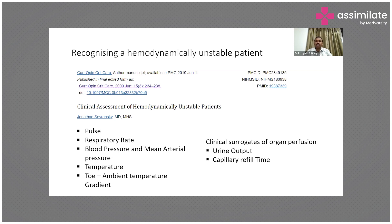There are other clinical surrogates for organ perfusion: urine output and capillary refill sign. When it comes to pulse rate, if the patient is hemodynamically unstable, the heart rate is on the higher side and can go as high as 150 to 160. The respiratory rate can also be elevated, unless the patient is just prior to cardiac arrest where both are on the lower side. Of blood pressure parameters, mean arterial pressure is more indicative of hemodynamic status. Temperature in a hemodynamically unstable patient can be low, normal, or elevated.